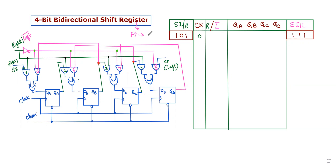Here we have to store 4-bit data, so we need four flip-flops. This is the basic memory element used to store binary data. So for a four-bit register, we use four number of flip-flops.